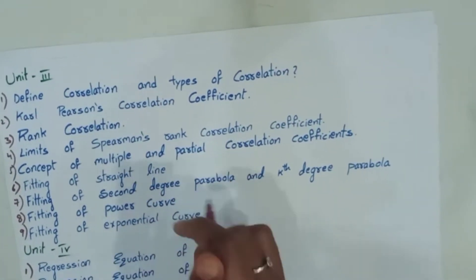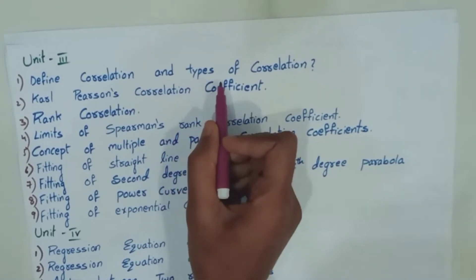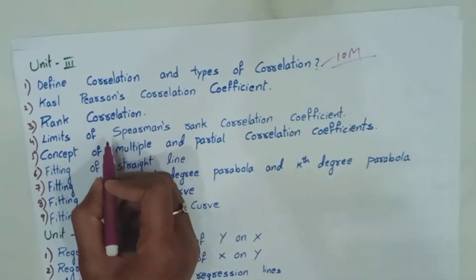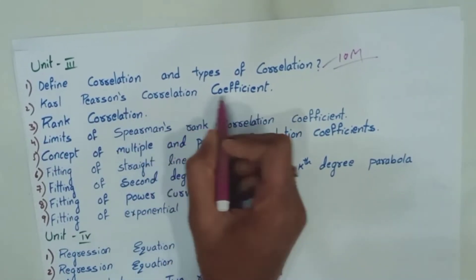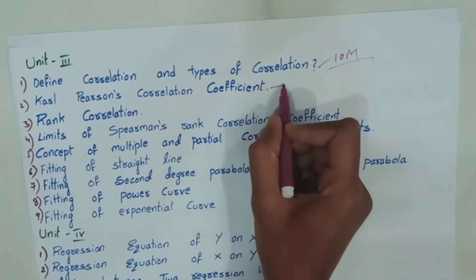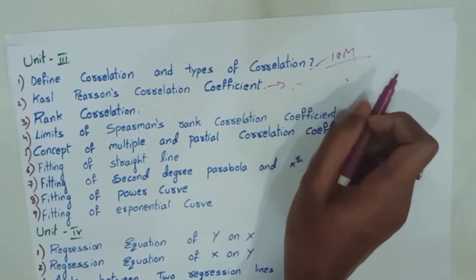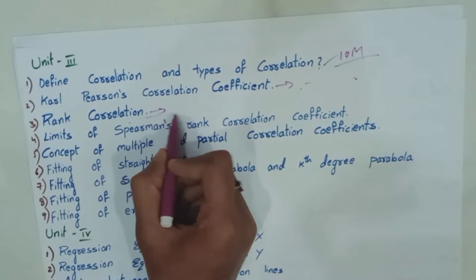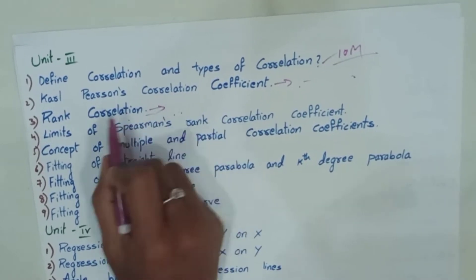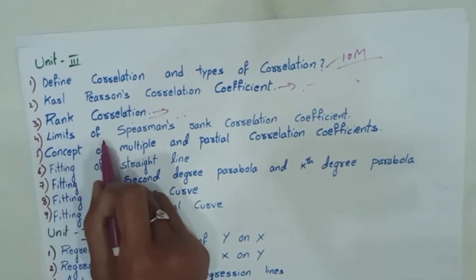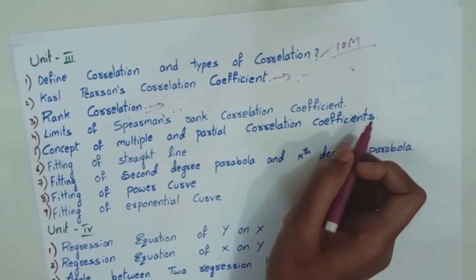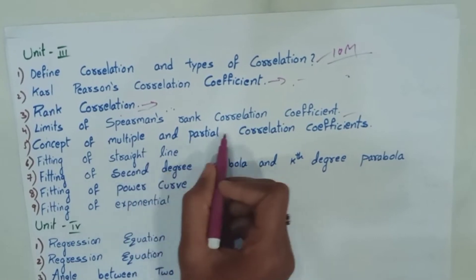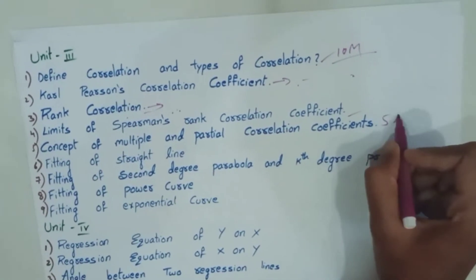Next, unit 3. Define correlation and types of correlation. This is important 10 marks. Karl Pearson's Correlation Coefficient Derivation part and what properties are there. Rank Correlation. This is definition and formula and derivation. Limits of Rank Correlation Coefficient. Next concept of Multiple and Partial Correlation Coefficient. This is 5 marks.